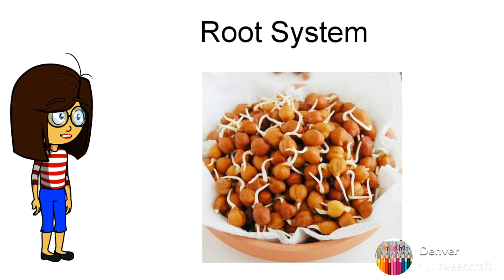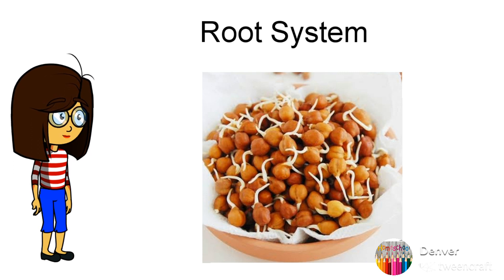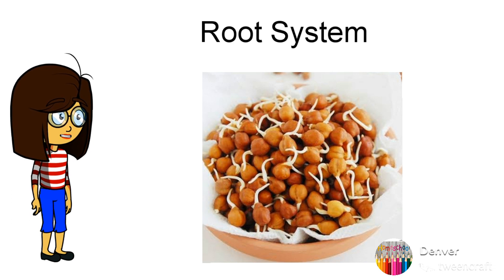As you can see in the picture, it is a gram seed — what you call chana. The white portion coming out is the sprout. From that white portion, new leaves and new roots will grow. This is called the sprouting of seeds.